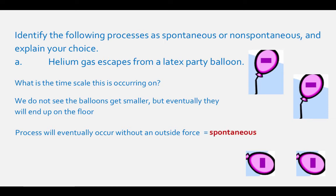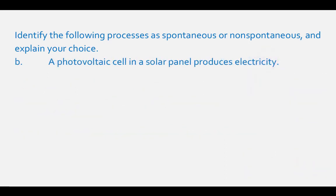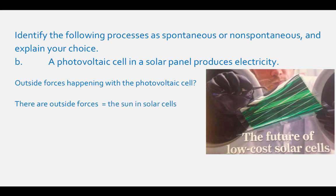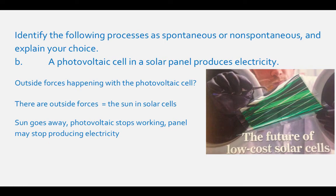For letter B, where a photovoltaic cell in a solar panel produces electricity, you need to ask yourself about the outside forces that are occurring in this process. When a photovoltaic cell is being used to produce electricity, there are outside forces occurring to make this process happen. In the case of a solar cell, it is the sun's energy that is the outside force. When the sun goes away, the photovoltaic stops working. If a reaction uses a continuous outside force, it is non-spontaneous.